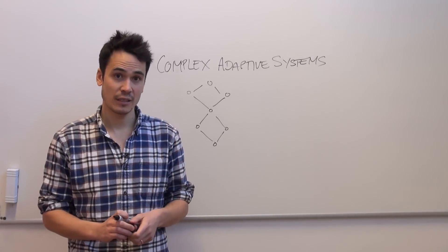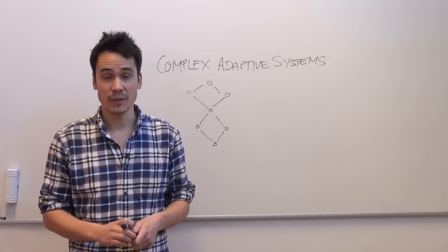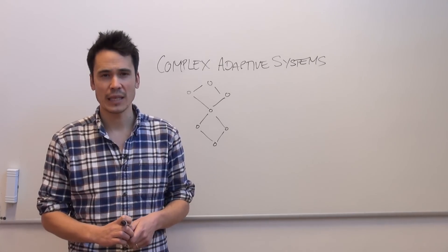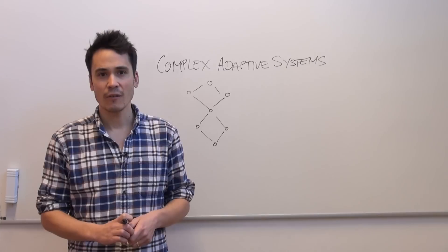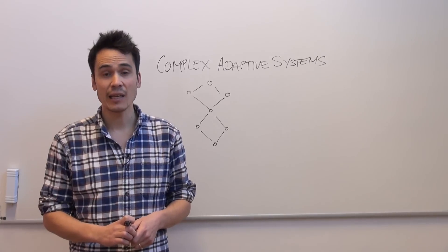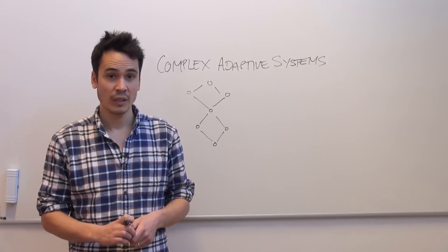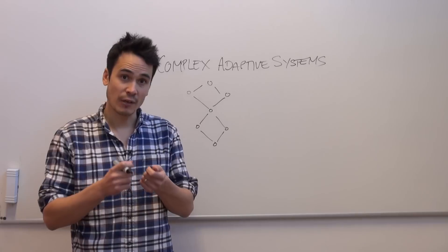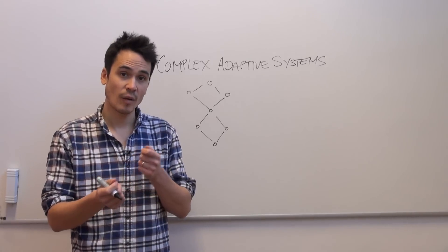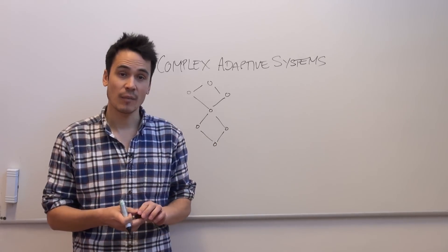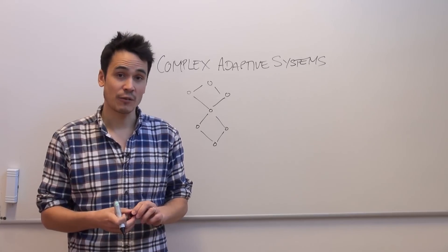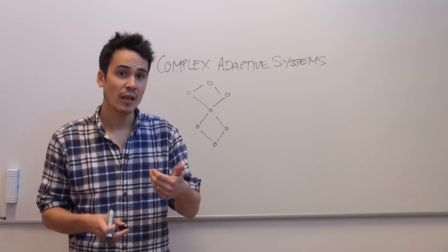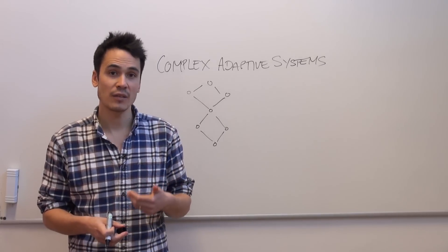Now these three characteristics lead to three fundamental properties shared by all complex adaptive systems. The first is that they are highly unpredictable. Complex adaptive systems are highly connected. That means the relationship between parts of the system can be very non-linear. And as a result, it's very hard to say what the state of the system might be sometime in the future.